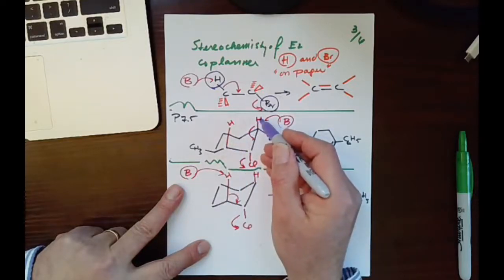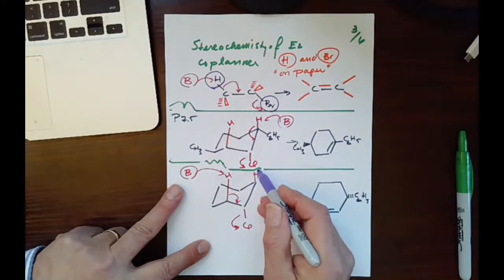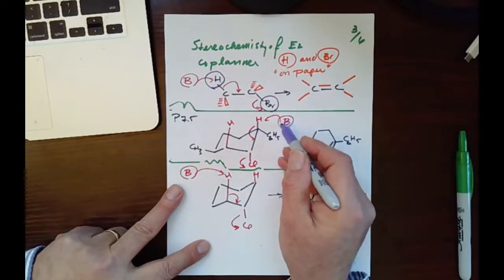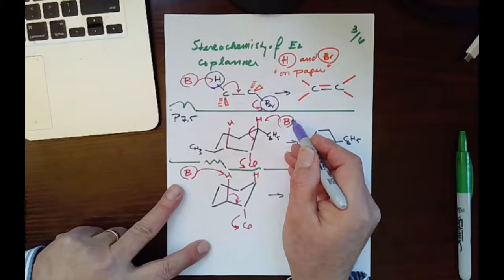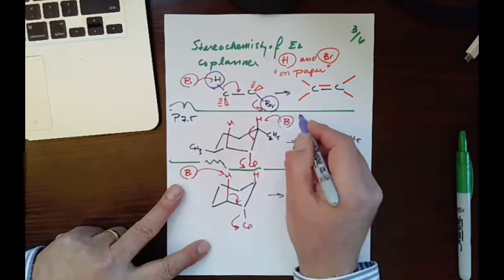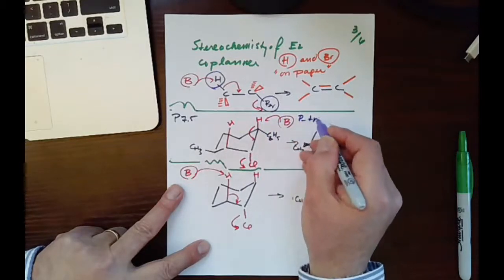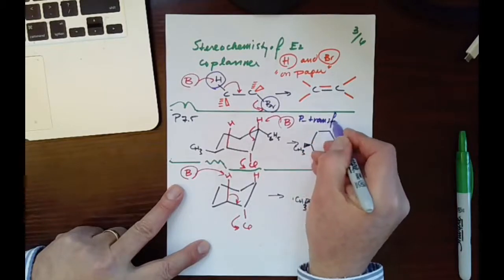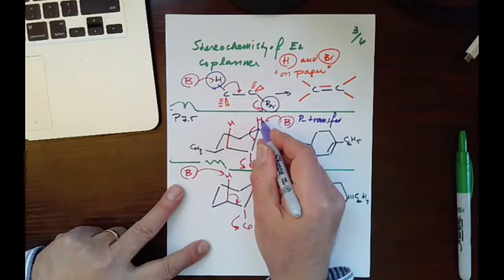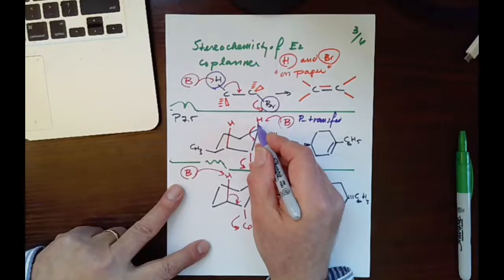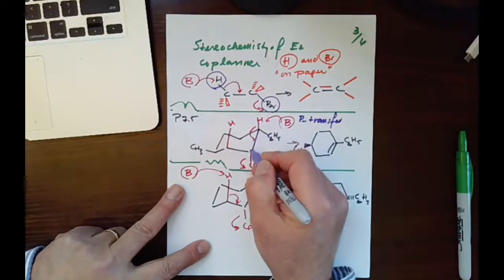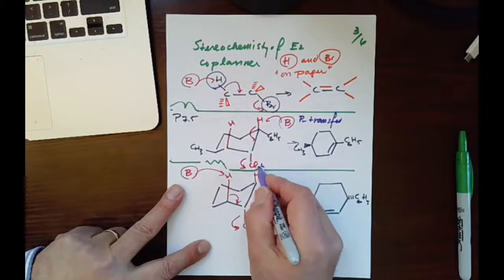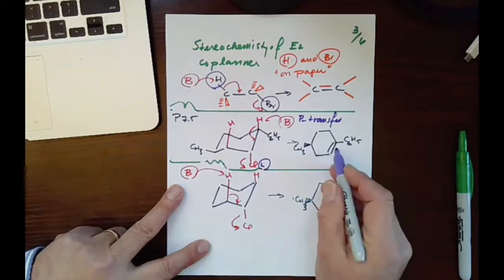We see there is an H and a Cl. So the base that we use is going to be a P-transfer. As we remember, we call that to a P-transfer, remove this acidic hydrogen. Then the electrons go here, make a double bond here, and Cl is the leaving group, makes this product.